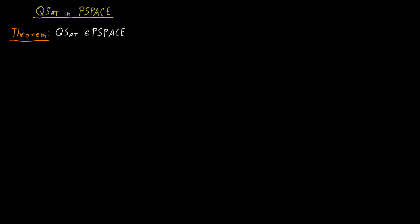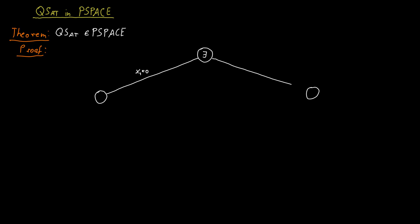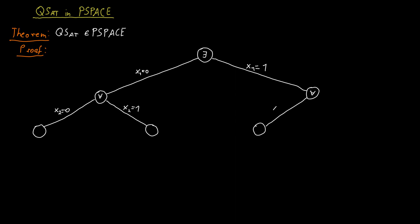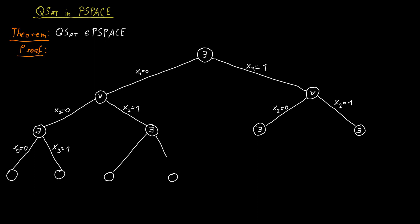We sort of have a tree. The root of the tree is where no value is assigned to any variable yet, and it belongs to the existential player, Alice. She picks a value for x1, which can be either 0 or 1, and we move down to the left or right child. That child belongs to Bob, the universal player, who picks a value for x2, depending on whether Alice picked 0 or 1 for x1.